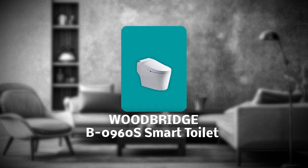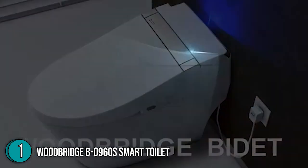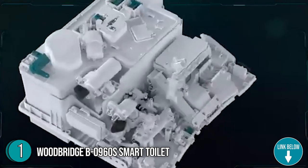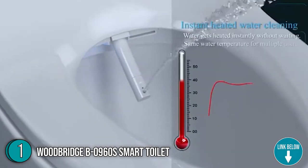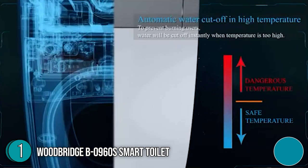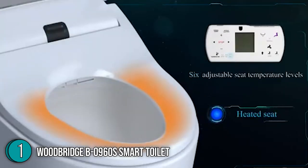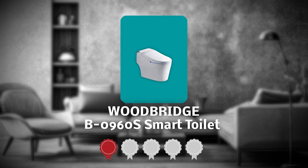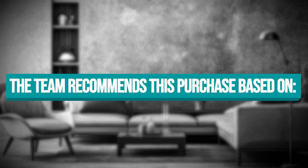The first best smart toilet on our list is the Woodbridge B0960S Smart Toilet. If you want the best value for your money, the Woodbridge B0960S Smart Toilet won't disappoint. Besides its advanced features, the smart toilet boasts a stylish contemporary design with a low profile and an elongated seat for maximum comfort and style. It measures 32x19x26 inches and weighs 114 pounds. TrustedShoppingGuide.com has awarded the Woodbridge B0960S Smart Toilet a 5 badge rating. The team recommends this purchase based on the following.